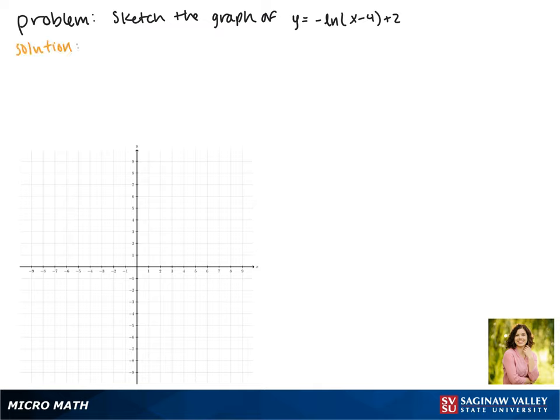We'll start by looking at the graph of the parent function, which is y equals the natural log of x. Notice that it passes through the point 1, 0.